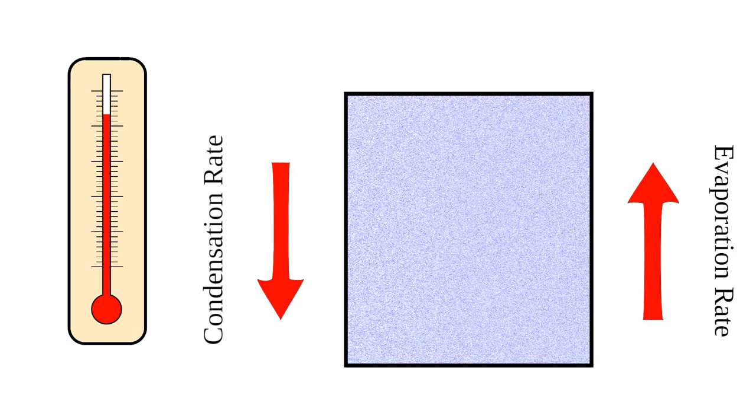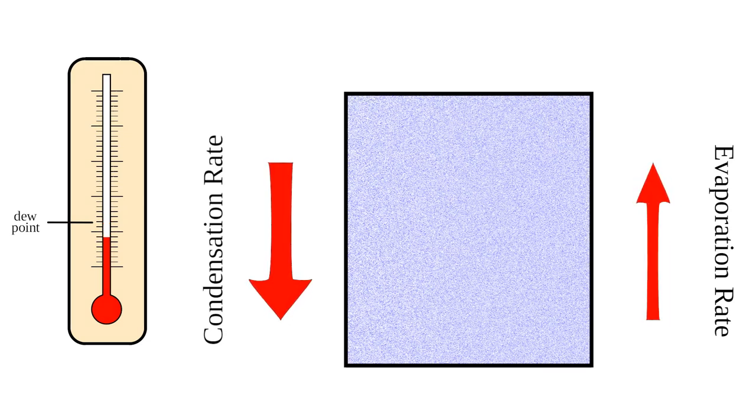Suppose next the temperature drops. At a certain temperature the condensation rate will start to exceed the evaporation and a bit of liquid water will be formed. This temperature is called the dew point and it depends on the amount of water present in the air as well as the pressure of the air. When the temperature drops further, liquid water is formed until evaporation and condensation rates are equal again.